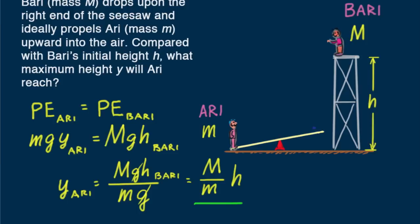The solution tells us that the relative heights of Ari and Bari depend upon their relative masses. If the masses of Ari and Bari are the same, then Ari will rise just as far as Bari drops. Or if Ari has half the mass of Bari, Ari will be propelled to twice the initial height of Bari.